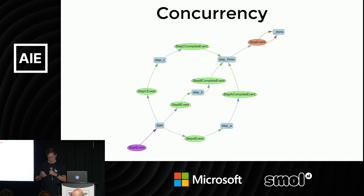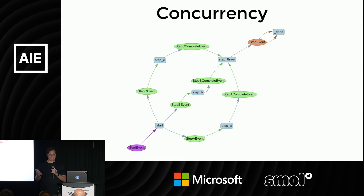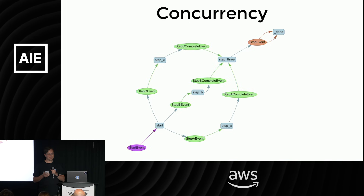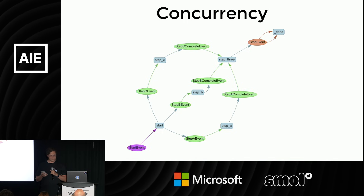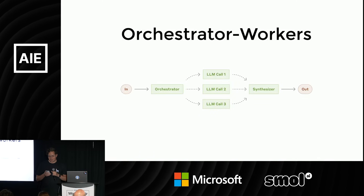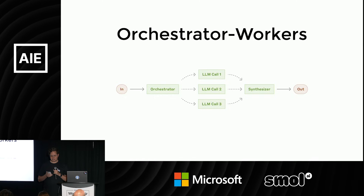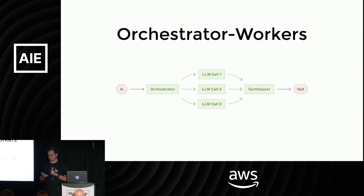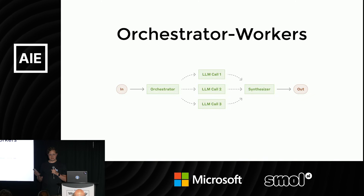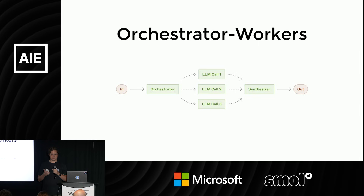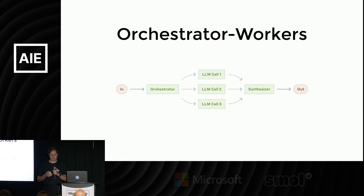Llama Index workflows allow you to emit multiple events simultaneously and then collect those events at the other end so you can do work concurrently. The visualization here is particularly pretty. The next pattern is orchestrator workers. You can use an LLM to look at a complex task like a multi-part question, split it into several simpler questions, and ask each of those in parallel. This is basically how deep research works — it takes a very complicated question, identifies all the possible sub-questions, answers them all at the same time, then aggregates all of those answers into one single coherent answer. This is a very powerful pattern that is doing a lot of good in the world right now.